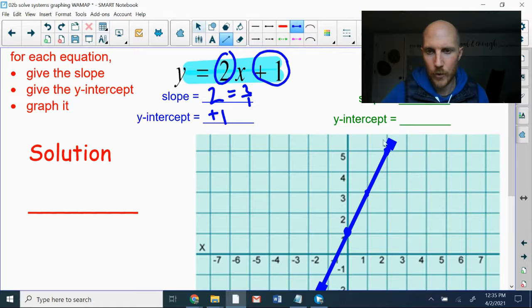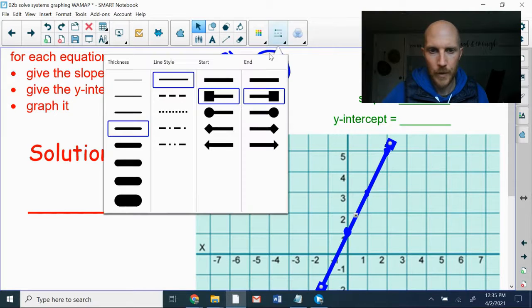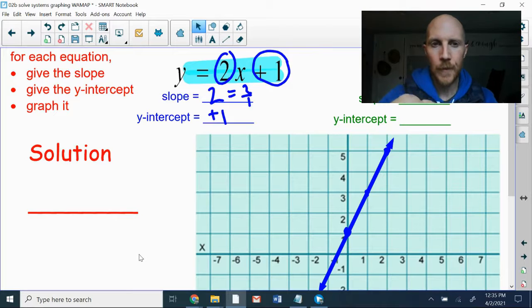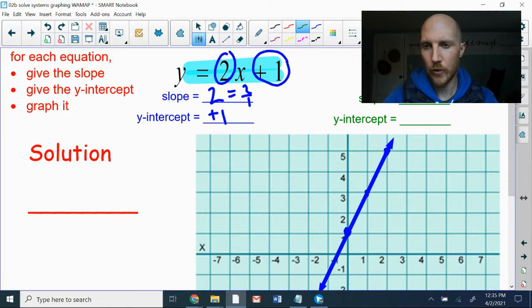And then the green one, green equation, Y equals two X plus one. So the slope being multiplied onto the X right there is two. As a fraction, that'll be two over one. The Y intercept at the end being added or subtracted is plus one. And that's the exact same thing we just saw.